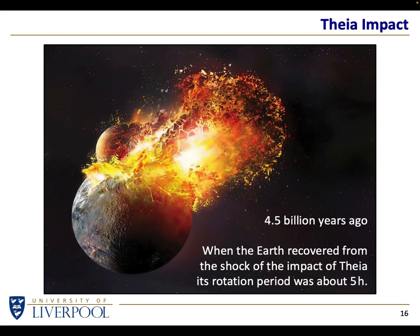We believe that when the Moon formed, the Earth was rotating at about once every five hours, and the Moon was much closer to the Earth than it is now. Over billions of years, the Moon slowly moved away and the Earth's spin slowed down. From a five-hour rotation in the very early days, it's now a 24-hour rotation, and in the far future it'll get slower and slower.